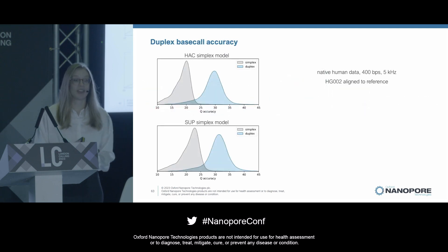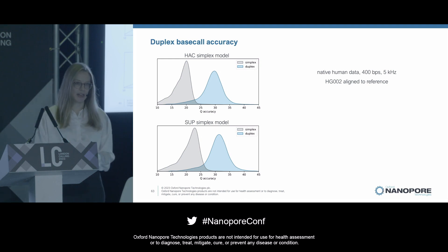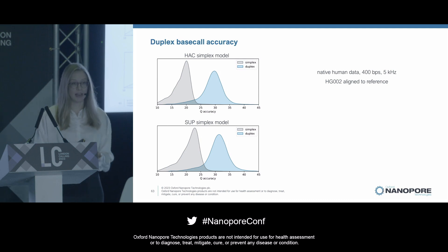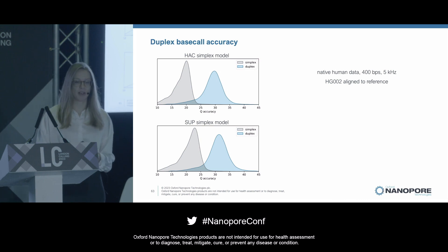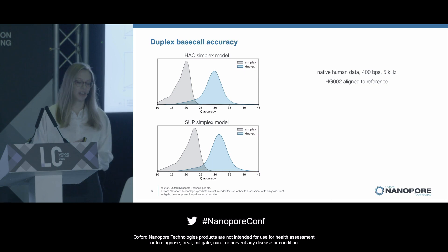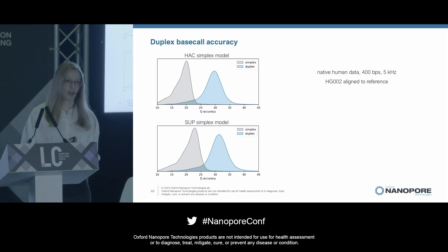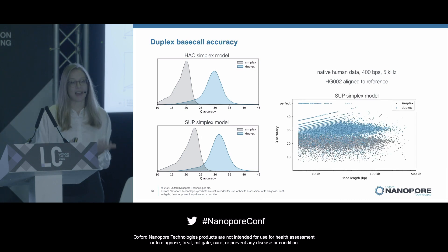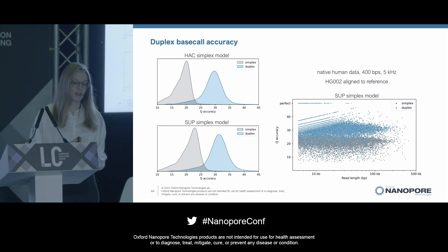Let's look at the accuracies of duplex base calling. These are histograms of raw read accuracies for native human data aligned to the best reference we have, from the 5 kilohertz condition. The duplex accuracy is shown in blue, and in gray, the corresponding simplex accuracies for the first strand of each pair, showing the direct improvement from duplex. The HAC condition has modal accuracies close to Q30 already at 5 kilohertz — very exciting. These accuracies are also independent of read length, so we have those high-quality Q30 reads all the way up to hundreds of kilobases.